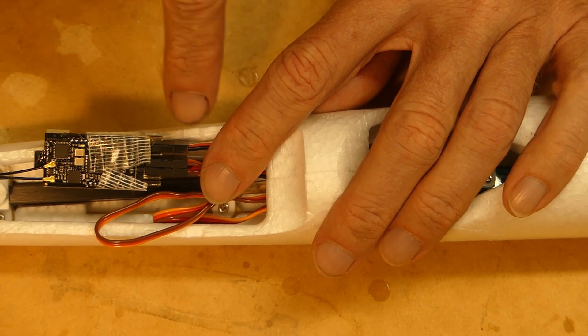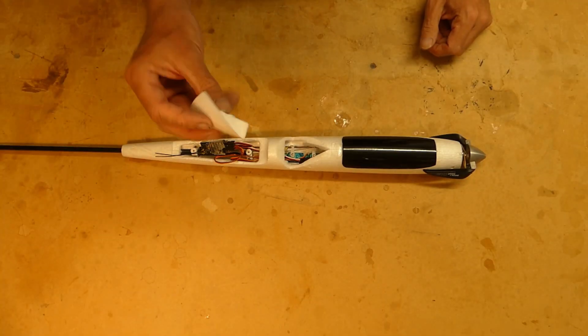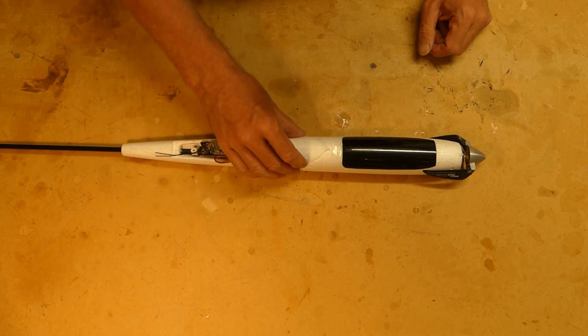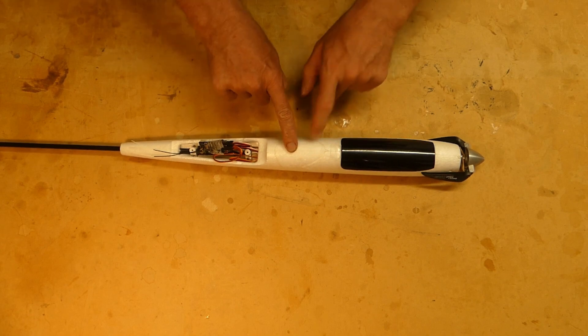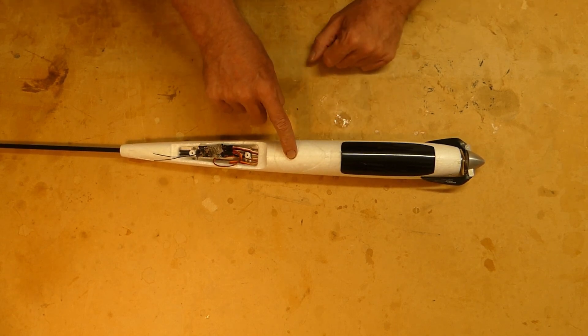The leads from the ailerons connect straight into the receiver. Now the little hatch I had to cut to get the servos in is simply put back and taped first and when I'm really happy with it I may or may not glue it back in again but the tape is enough I think.